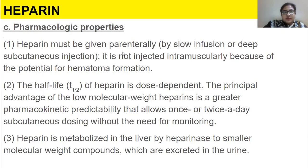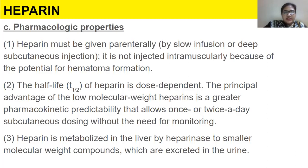Regarding pharmacological properties, heparin must be given parenterally by slow infusion or deep subcutaneous injection. It is not injected intramuscularly because of the potential for hematoma formation. The half-life of heparin is dose-dependent. The principal advantage of low molecular weight heparin is greater pharmacokinetic predictability, allowing once or twice daily subcutaneous dosing without the need for monitoring.